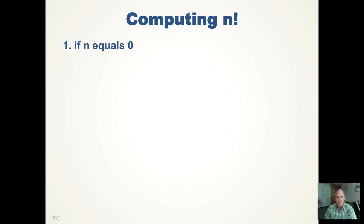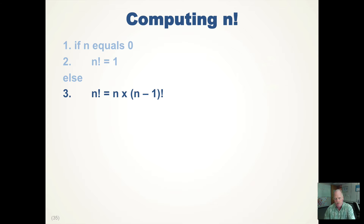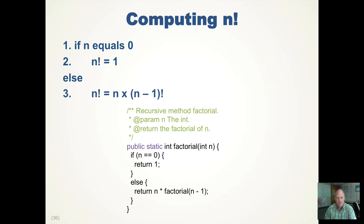How would we compute n factorial? If n equals zero, then n factorial is one by definition. Else, n factorial equals n times (n minus one) factorial. We've made this problem smaller by saying n minus one. So we do it recursively by calling factorial on n minus one and then multiplying by n. Here's the Java code: we have a method factorial that takes an n. If n is zero, we simply return one. Else, we return n times the recursive call of factorial on n minus one. As long as n is positive, we will get to n equals zero and then the activation records will pop back up.